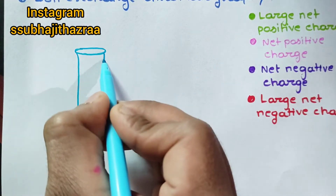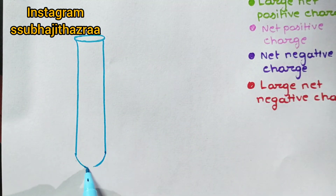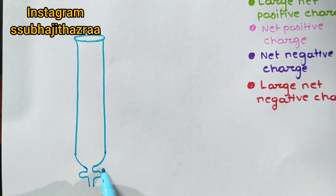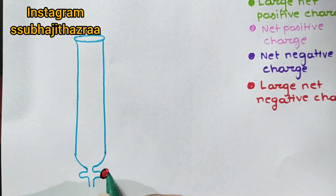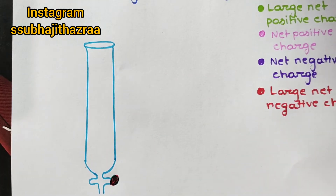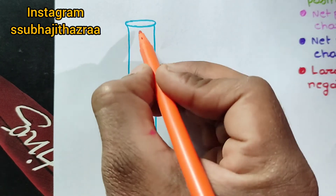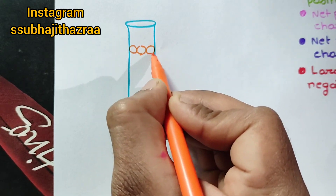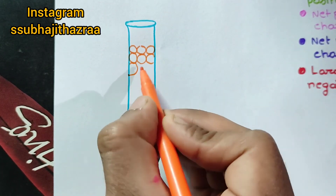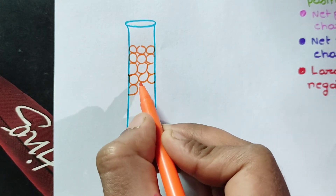This is the column, and the column is filled with a synthetic polymer called resin. The orange color denotes the synthetic polymer called resin, and the column is filled with these resins.